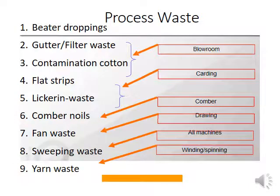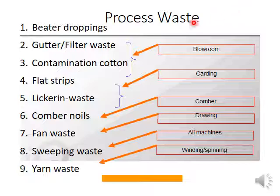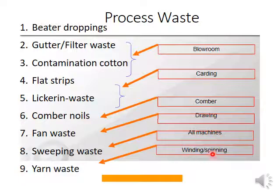Now, types of process waste generated in spinning — particularly in cotton spinning. These are the various stages at which waste is generated: blow room, carding, comber, draw frame, and other machines, as well as winding and spinning.